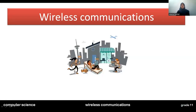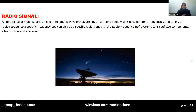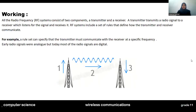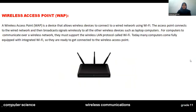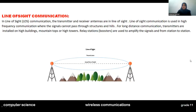Hello everyone, today we will learn the 6th chapter of wireless communication. The topic we are going to study today is the radio signal and its working. After that we will see what is the radio transceiver, what is the wireless access point, and what is the line of sight communication.